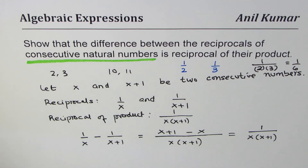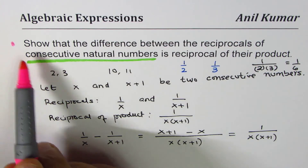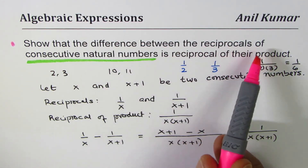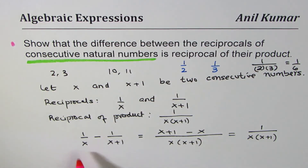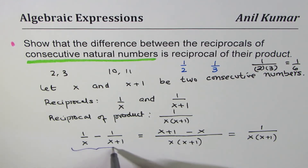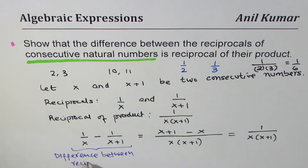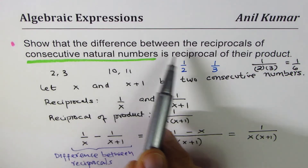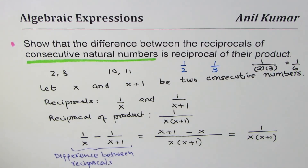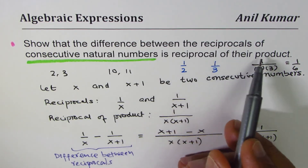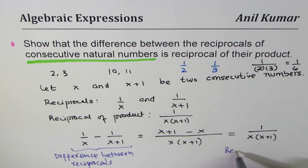So we have shown that the difference between the reciprocals of consecutive numbers equals the reciprocal of their product, which is exactly what the question asked us to prove.